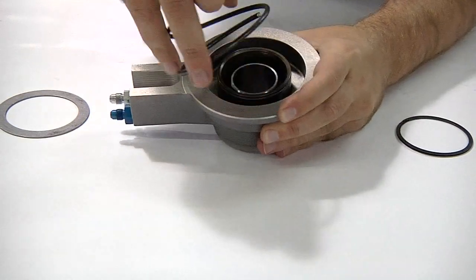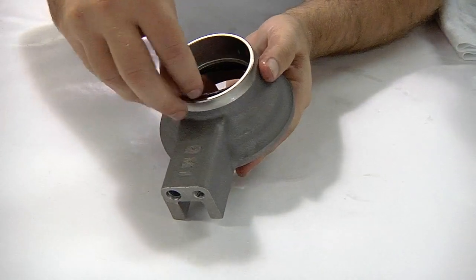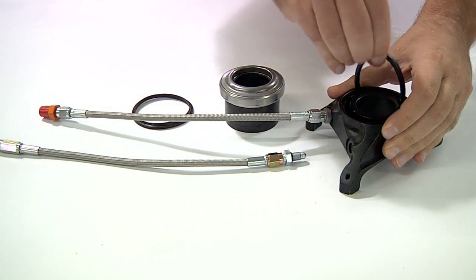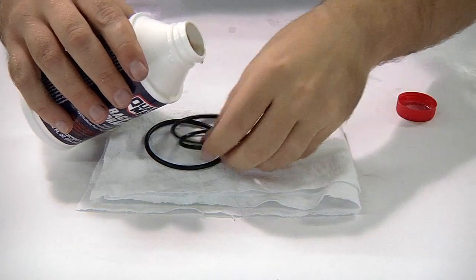Regular maintenance and seal replacement in hydraulic release bearings, or throwout bearings as they're often called, will ensure consistent, firm shifts.